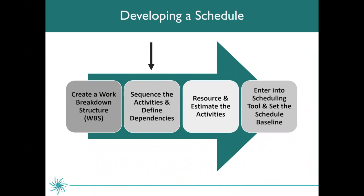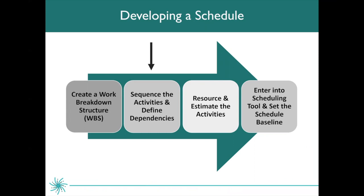Once you have your work breakdown structure created, you want to sequence the activities and define dependencies. Before I show you what this looks like, I want to go through a little bit of terminology. A predecessor is an activity that precedes another activity — this task must be accomplished before the next task can begin. That's called a predecessor. A successor is the one that comes second, what follows as far as the work. An activity can have several predecessors and it can also have several successors.